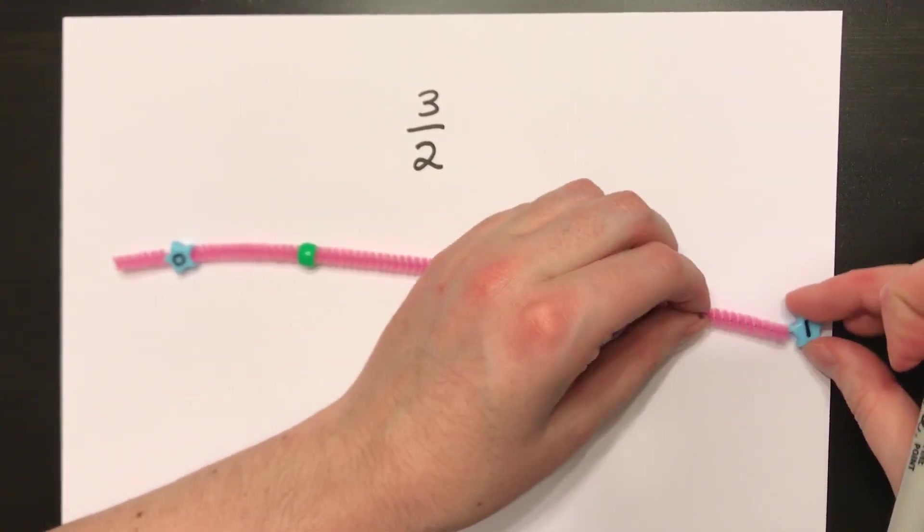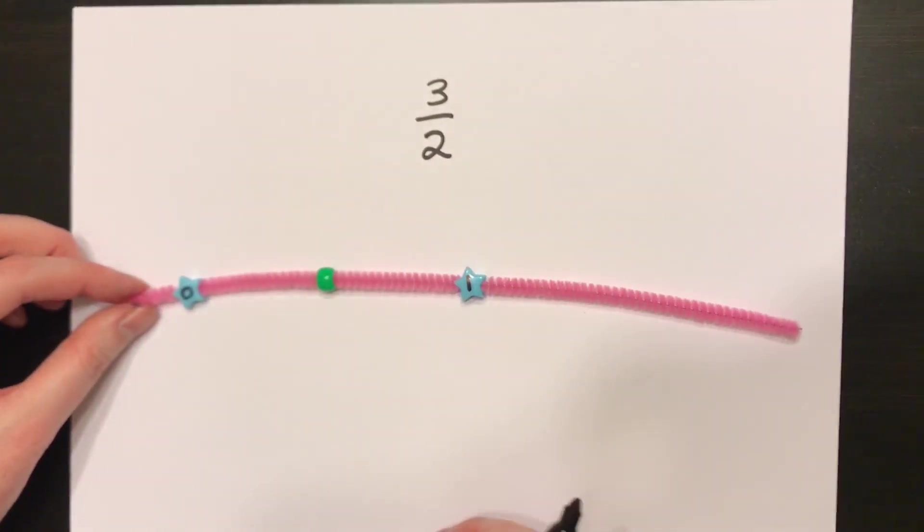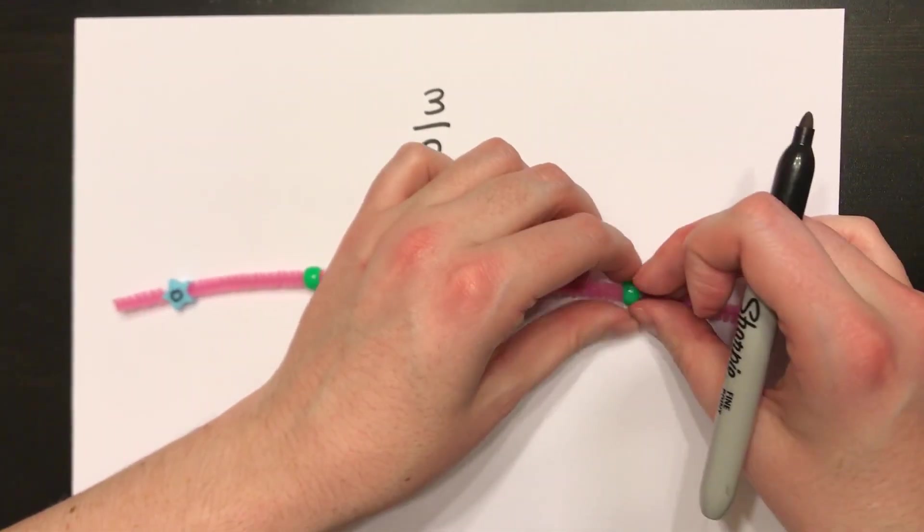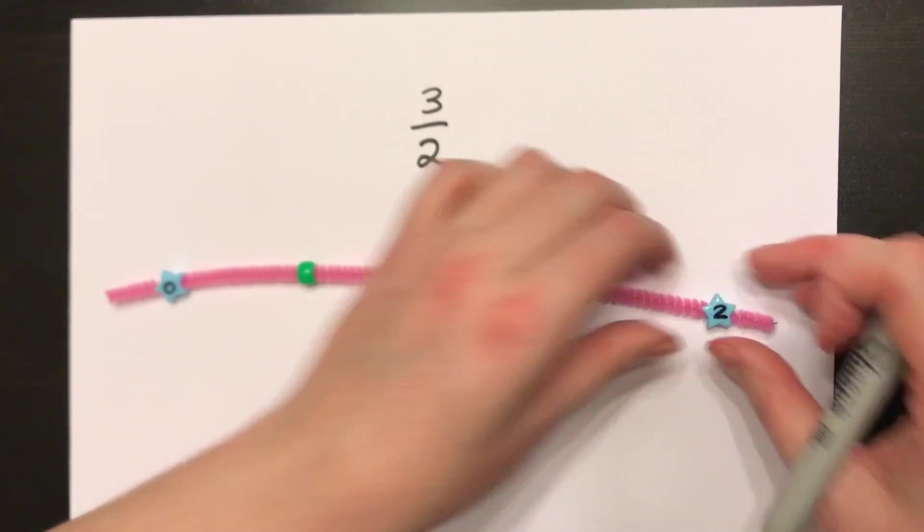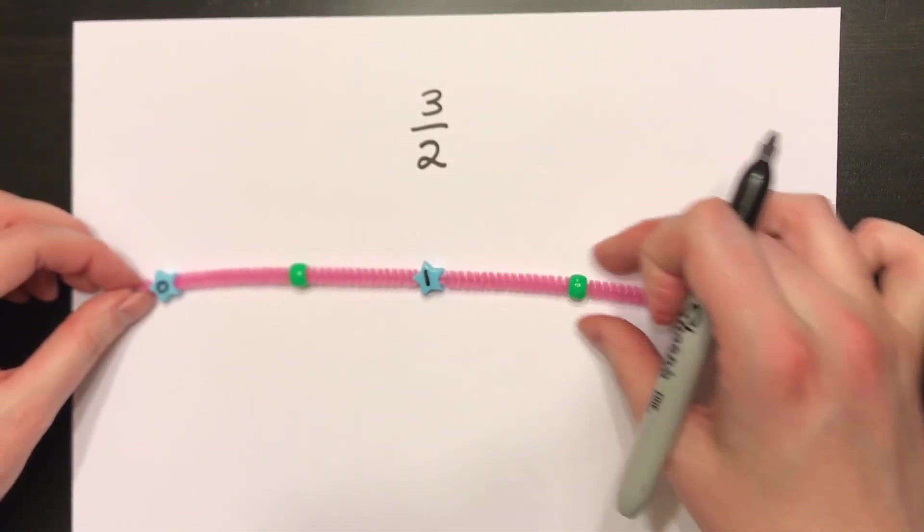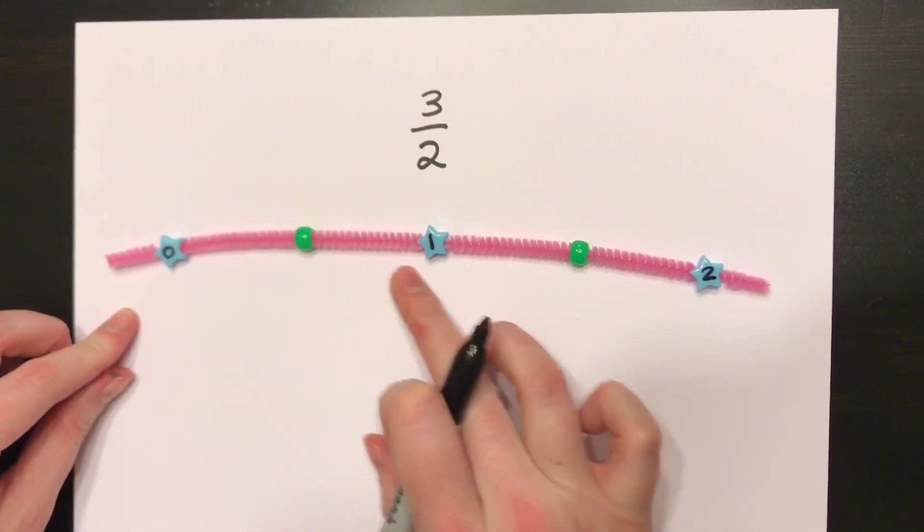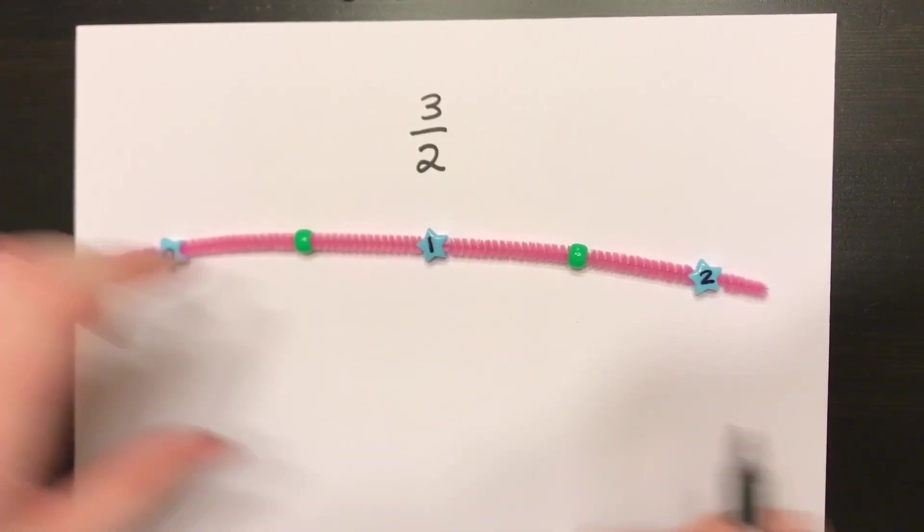Then I'm going to split right now between 0 and 1 into two parts. Then I'm going to extend it by putting another bead and breaking 1 to 2 into two equal parts. Making 1 half, another half, between my two wholes.